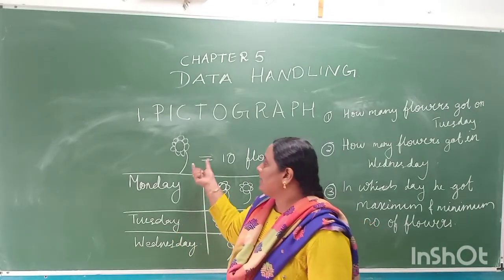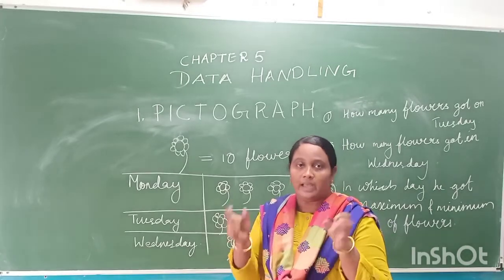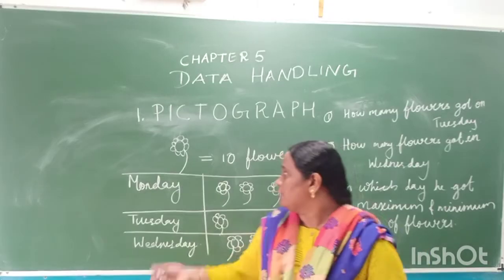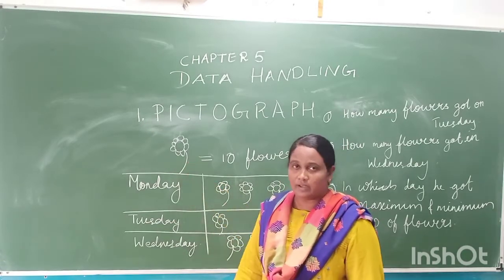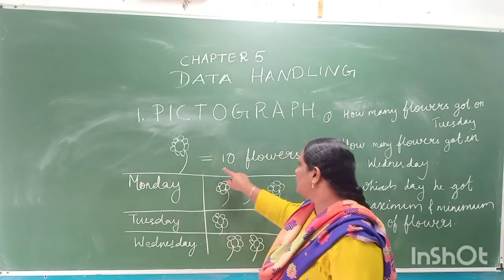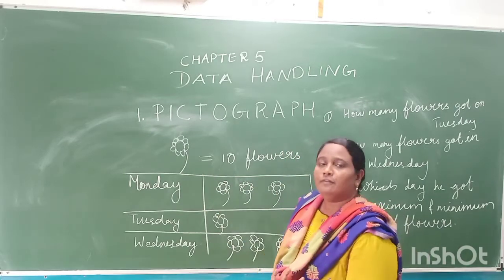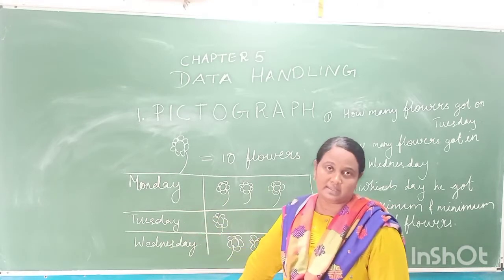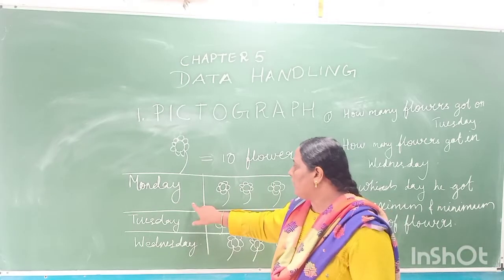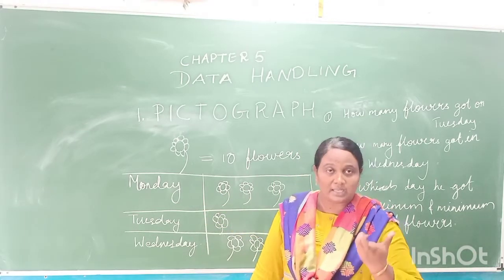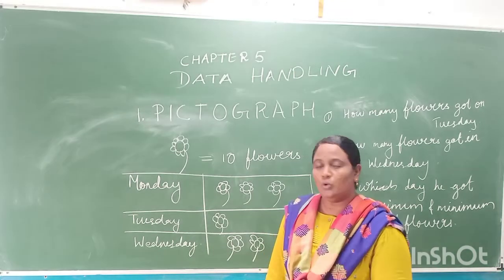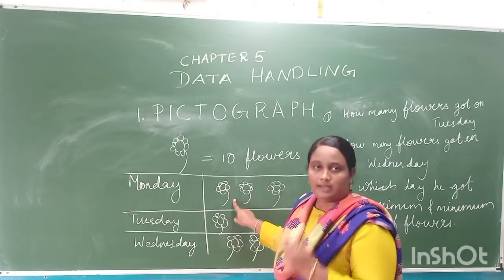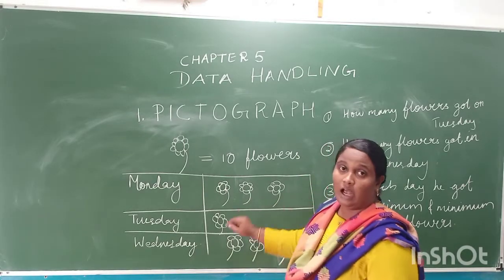A pictograph represents data using pictures with a scale. For example, here you can see a picture of a flower, where one flower indicates ten flowers. This is the list of flowers collected each day — Monday, Tuesday, and Wednesday — for a gardener. On Monday we have three flower pictures. Since one flower represents ten flowers, three flowers mean thirty flowers.